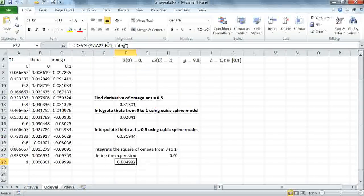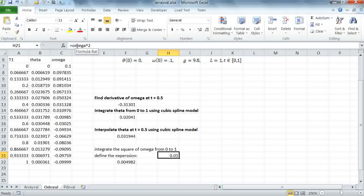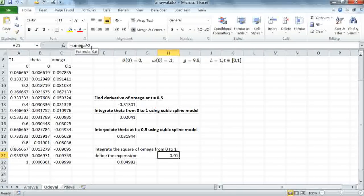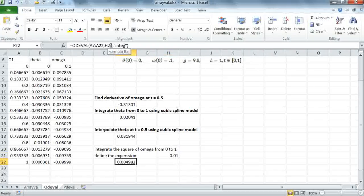I can also pass a formula for the operand here. For example, here I'm integrating the square of omega instead of omega, so I define the formula for omega squared and I pass the formula instead of just omega.